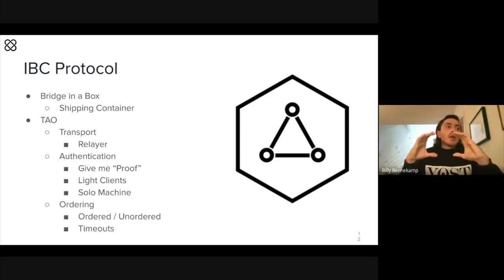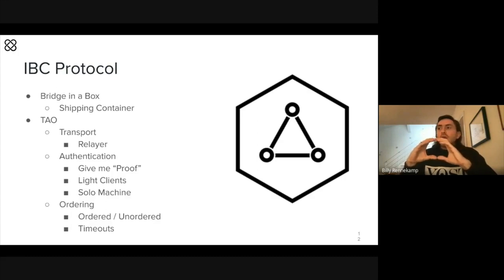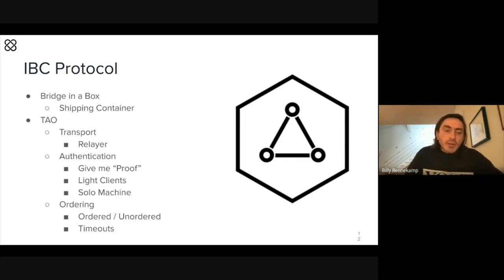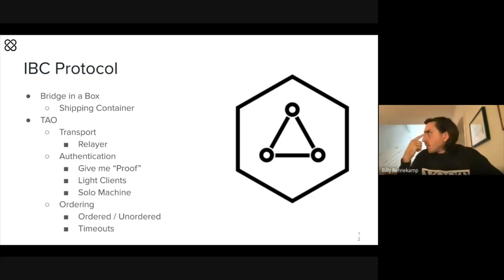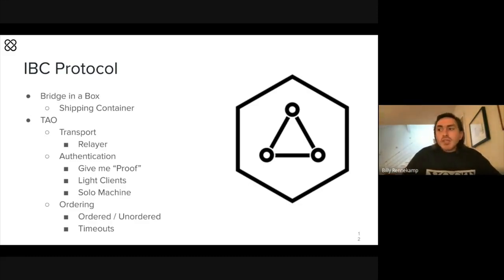The actual packet doesn't know what's inside of it or who's sending or receiving it. It's built in a standard way so it can answer those questions reliably, no matter where it is or who's asking. The transport layer is basically the ships, the trucks, and the cranes that move these packets — they don't need to know what's inside, they just need to be able to read the label that says where it's going, who's receiving it, and whether they paid to have it shipped.